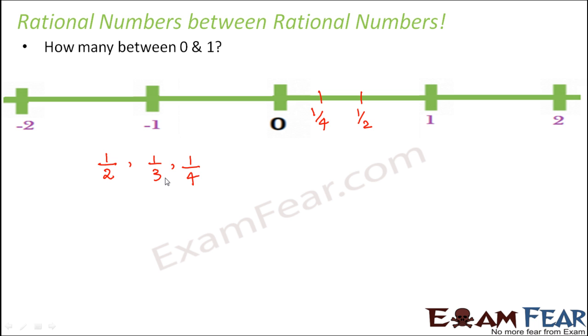But do you think that these are the only rational numbers existing between 0 and 1? No, that's not the case. Let's see now, 1 by 2 I can very well write as 10 by 20, because 10 by 20 would actually mean 1 by 2, right? Now when I write 10 by 20 as 1 by 2, what about these numbers like 11 by 20, 12 by 20, 13 by 20, 14 by 20?